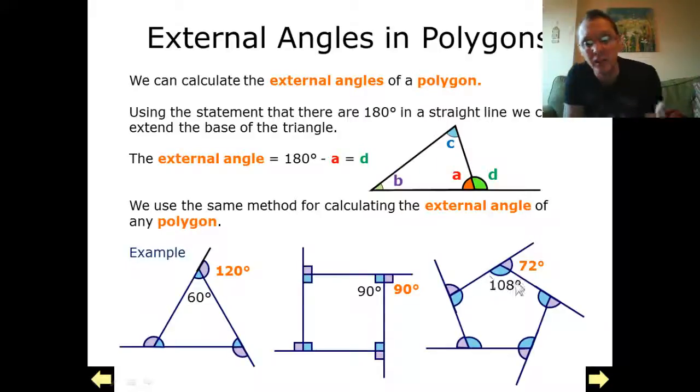360 divided by this number N for the number of sides, that will give you the external angle of a regular polygon.